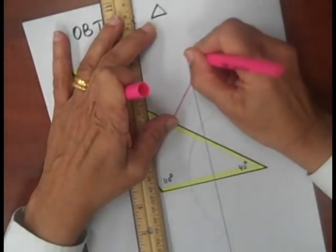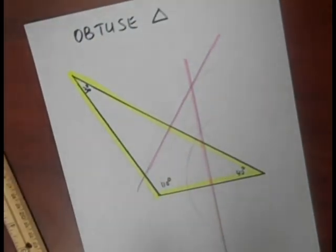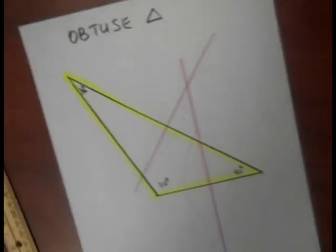Highlight with a pink. Second perpendicular bisector. Now the third perpendicular bisector.